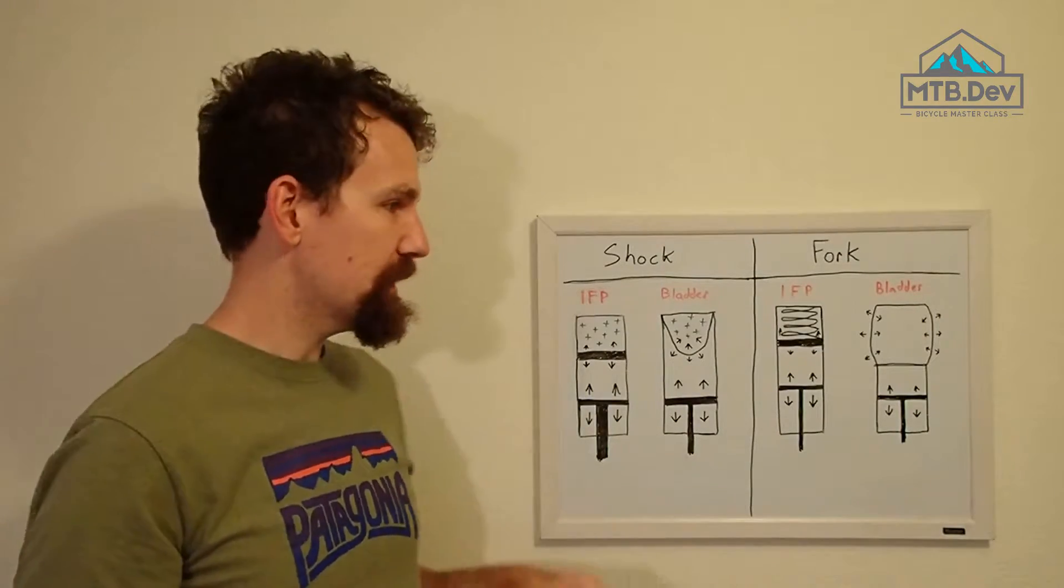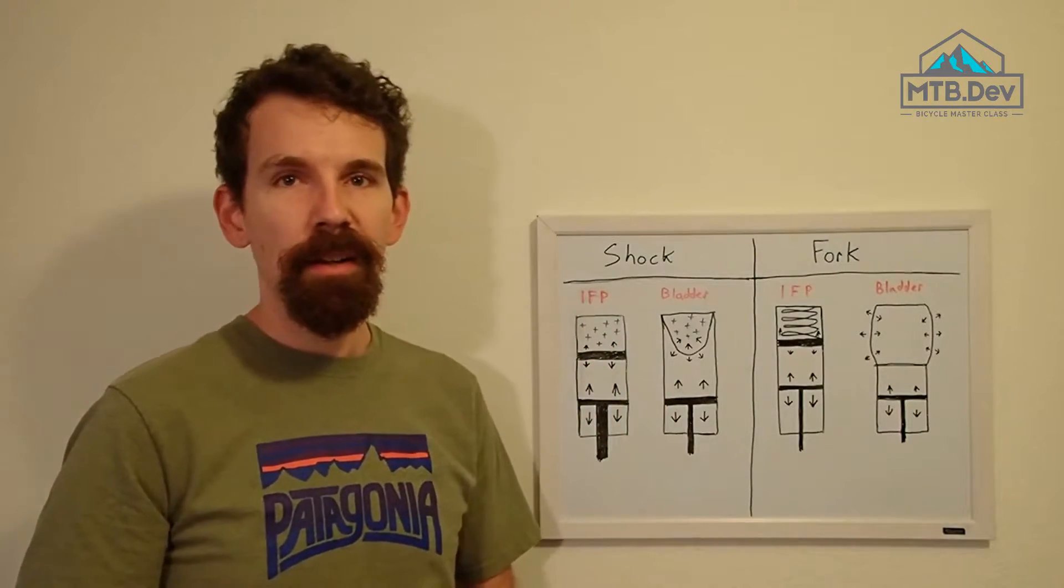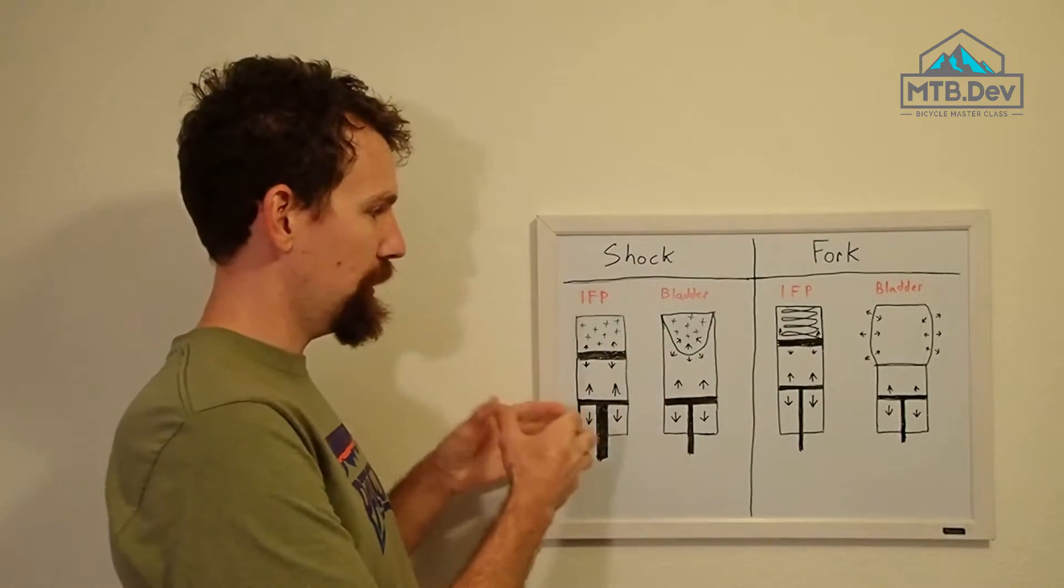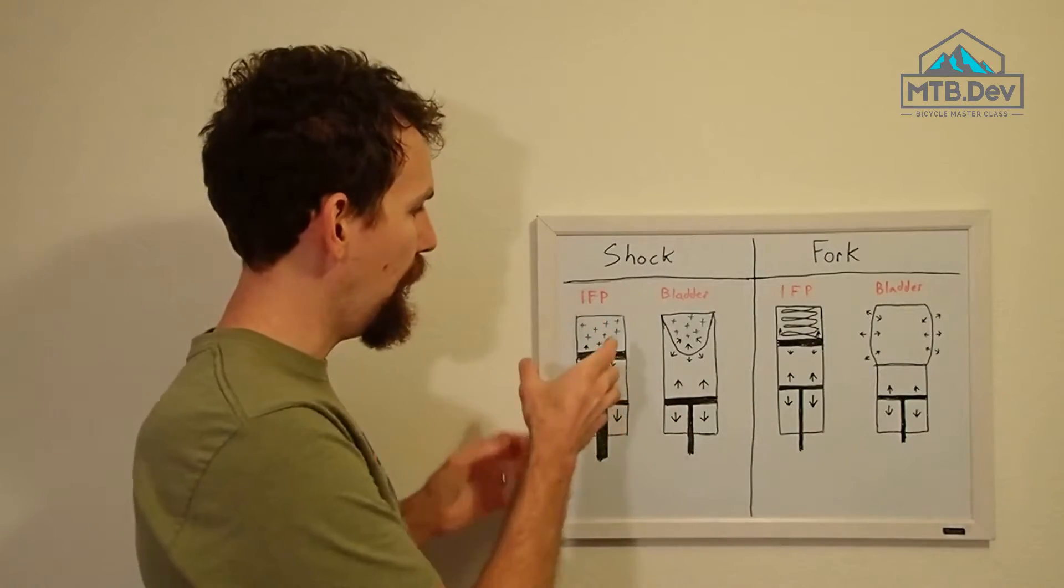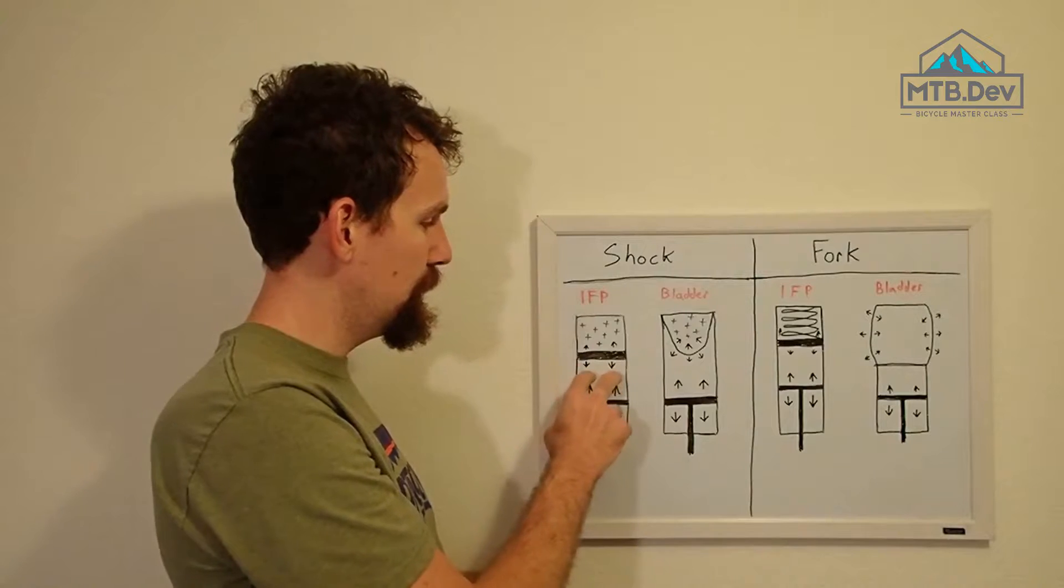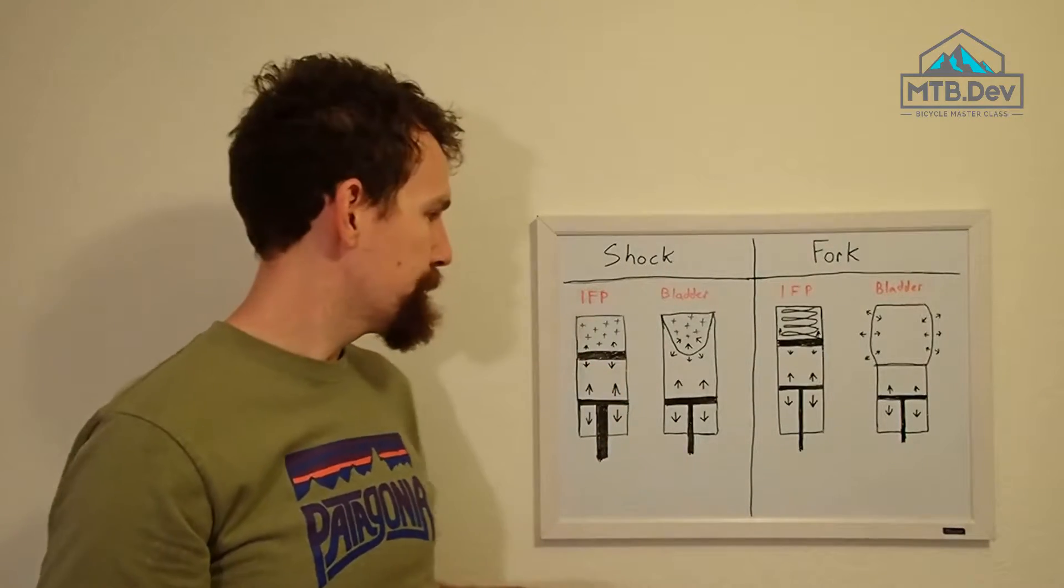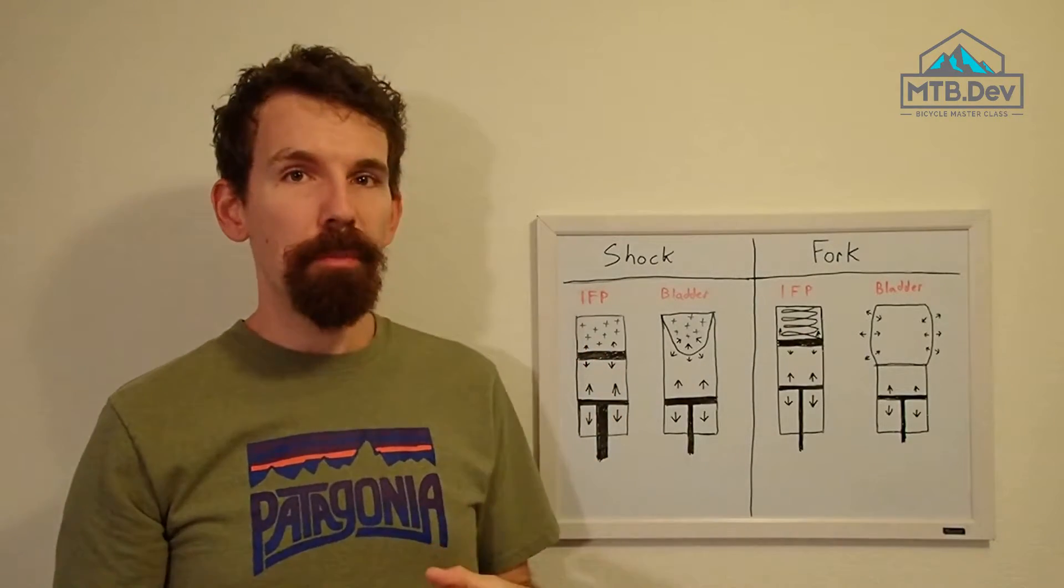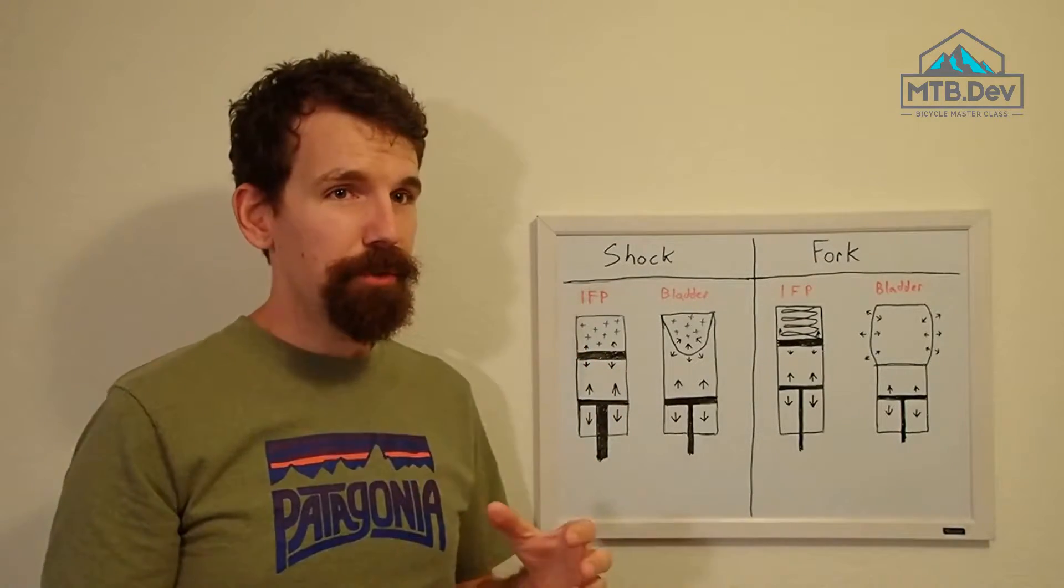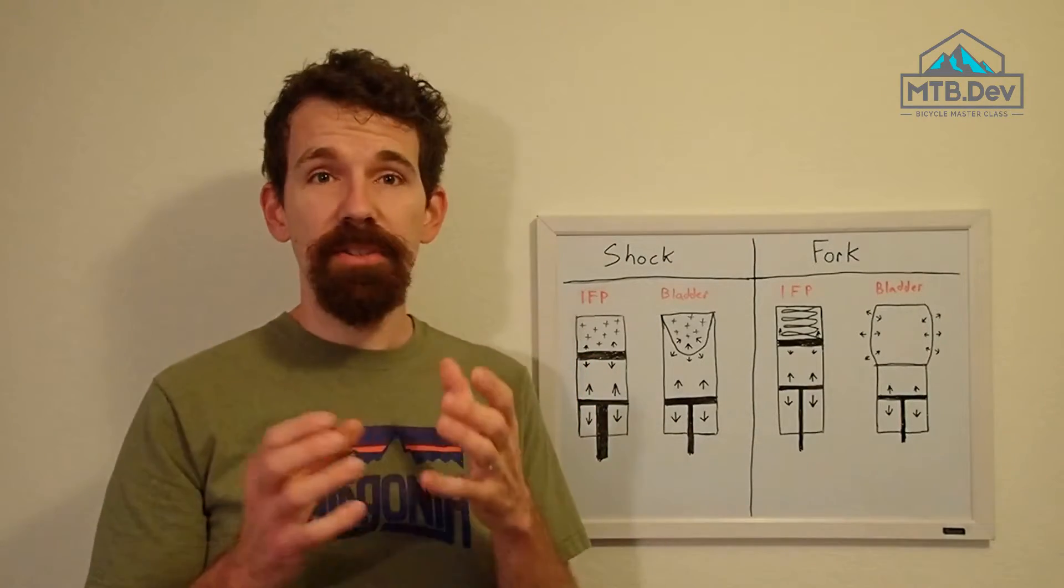Now with the IFP system, you use a small disc that's sealed against the sides of the damper body and is allowed to move up and down freely as the volume changes in the damper body. Now these are fairly robust, but they do have a few downsides.